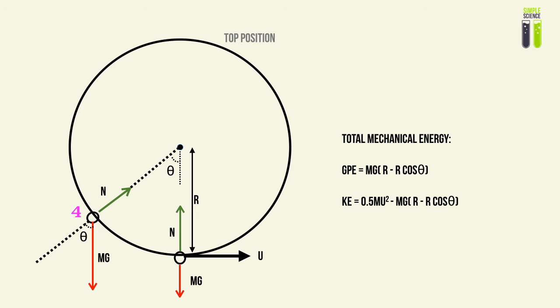At a position defined by an angle θ, the height is r − r cos θ, so the gravitational potential energy is mg(r − r cos θ). The kinetic energy is the total mechanical energy minus GPE — since energy is conserved — giving ½mu² − mg(r − r cos θ).